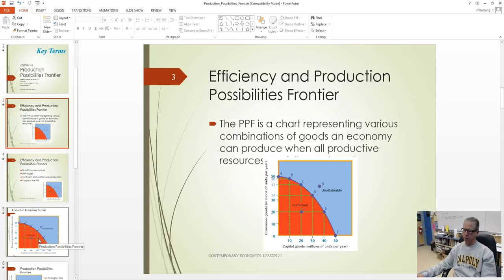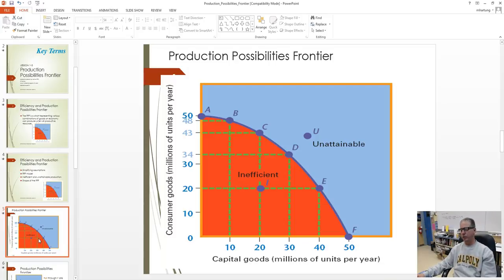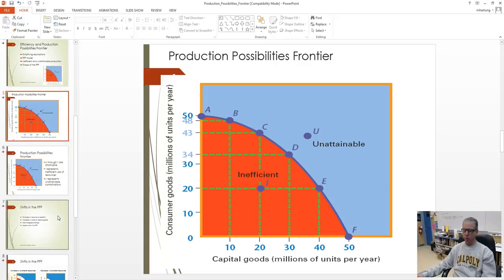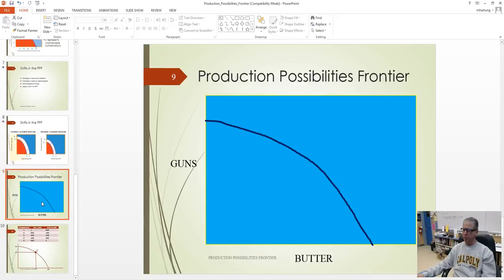The chart represents various combinations of two different types of products that could be produced in this example. It breaks it down and makes it simple because there's just two things we're looking at. In this particular frontier, we can either produce capital goods, shown here on the x-axis, or consumer goods. One of the classic models is guns and butter. You see this a lot in textbooks where the economy can produce all guns or all butter. These are used as examples to illustrate if you were to become very militarized in your economy and produce a lot of defense products, or focus your economy on producing things for your citizens, represented by butter.